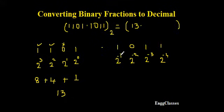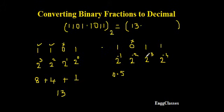The first digit is 1×2⁻¹. 2⁻¹ is 1/2 which equals 0.5, so 0.5×1=0.5. Next is 0 times 2⁻², which is 0. Then 1×2⁻³: 2⁻³ is 1/2³ which is 1/8.